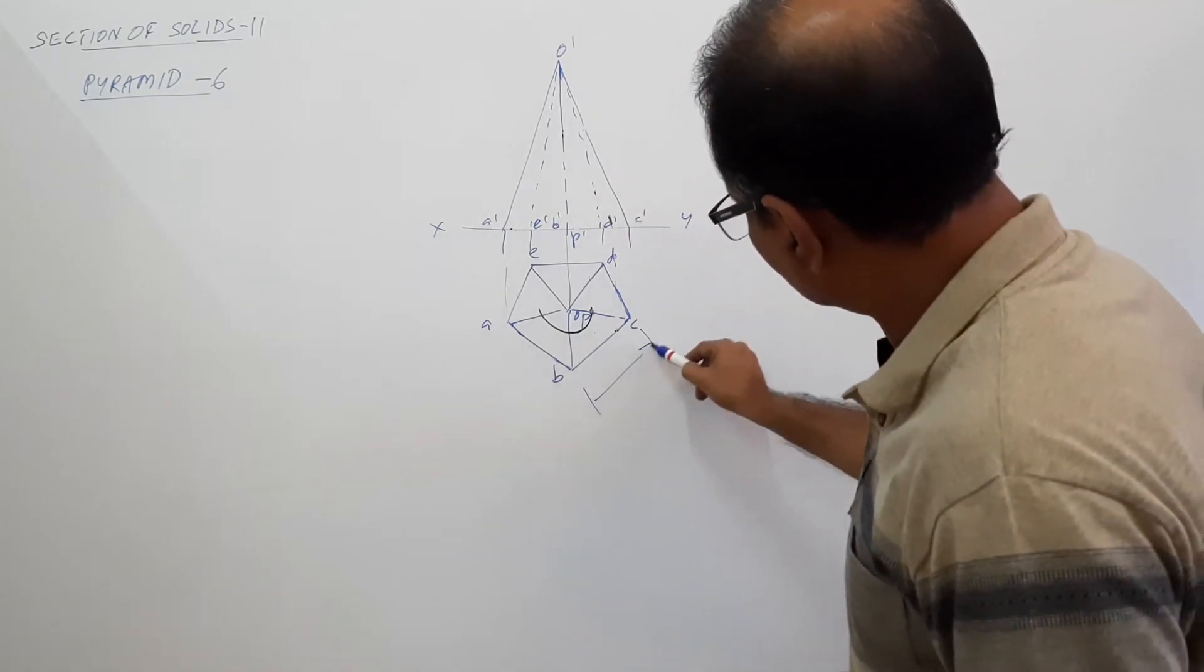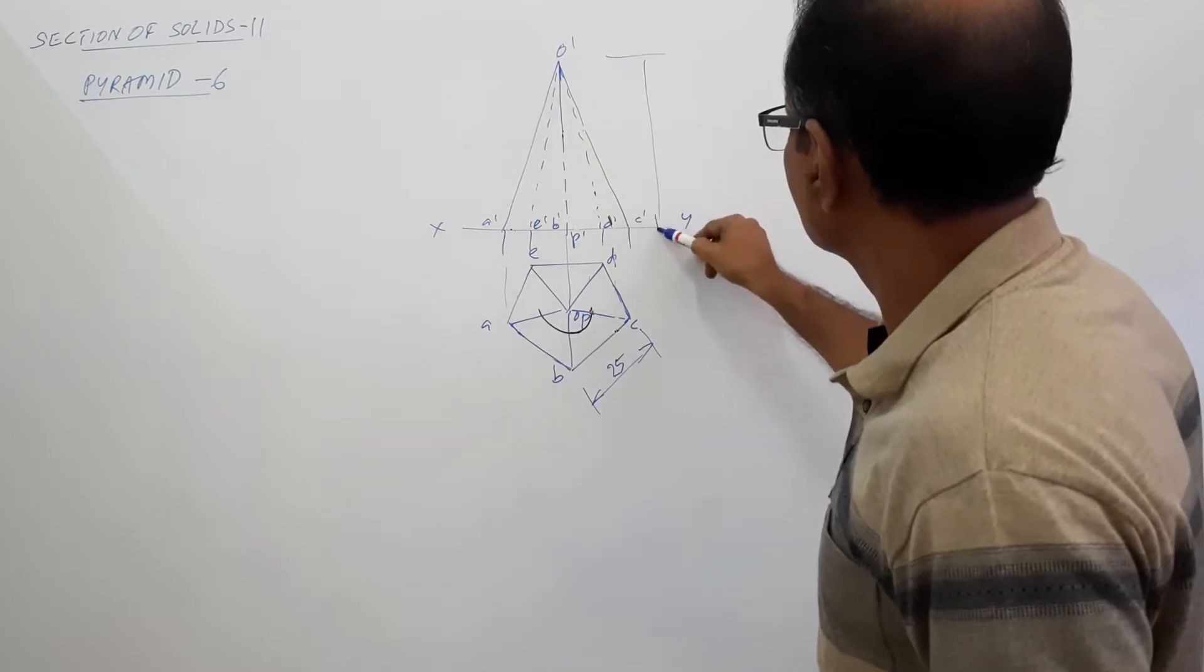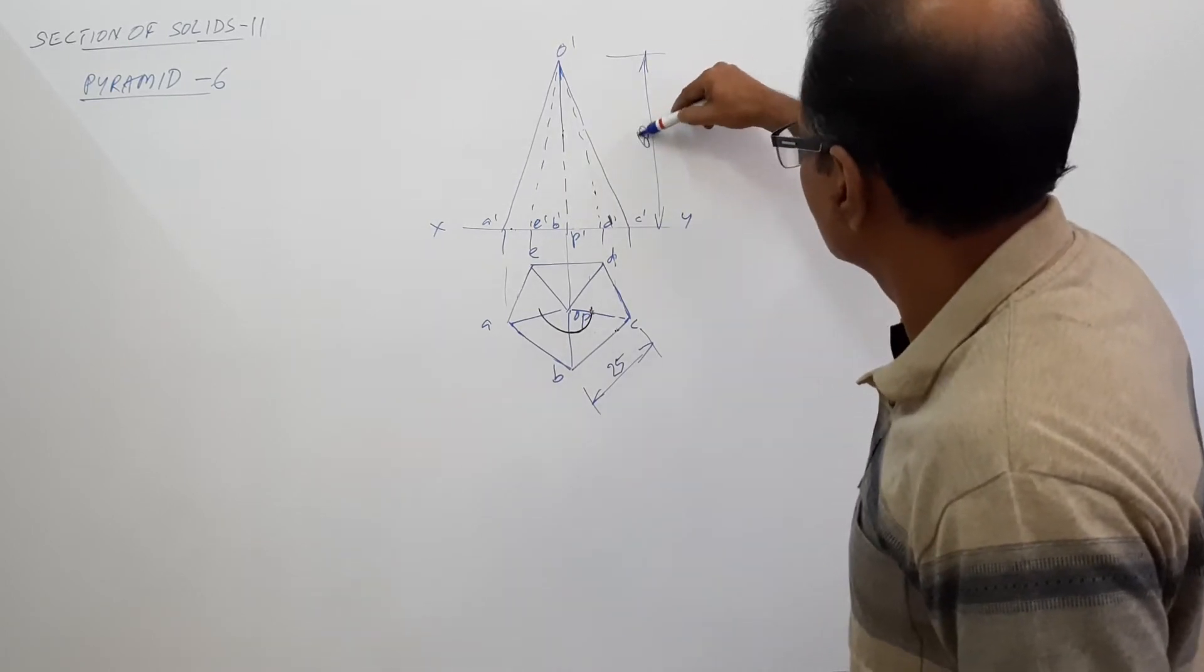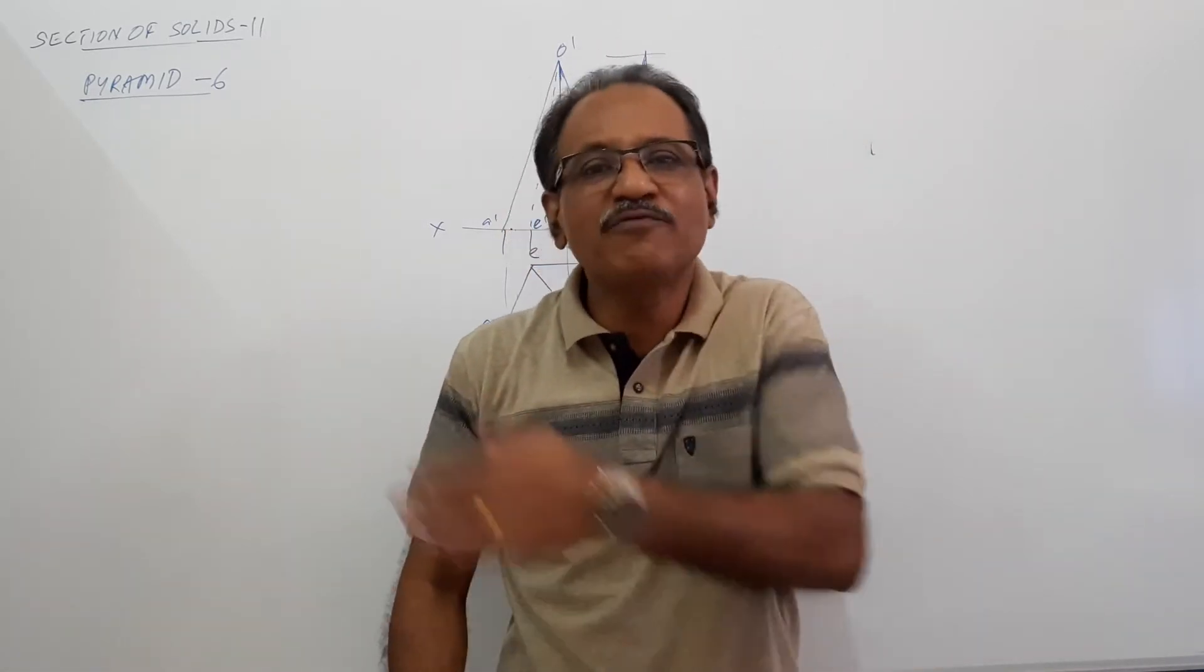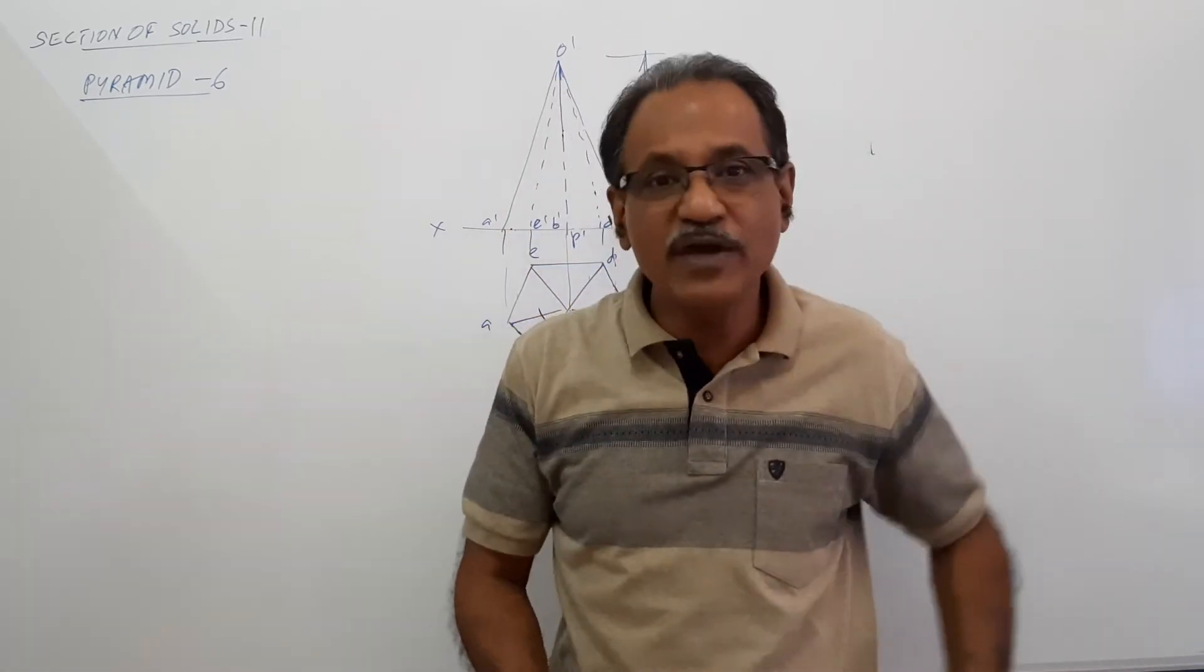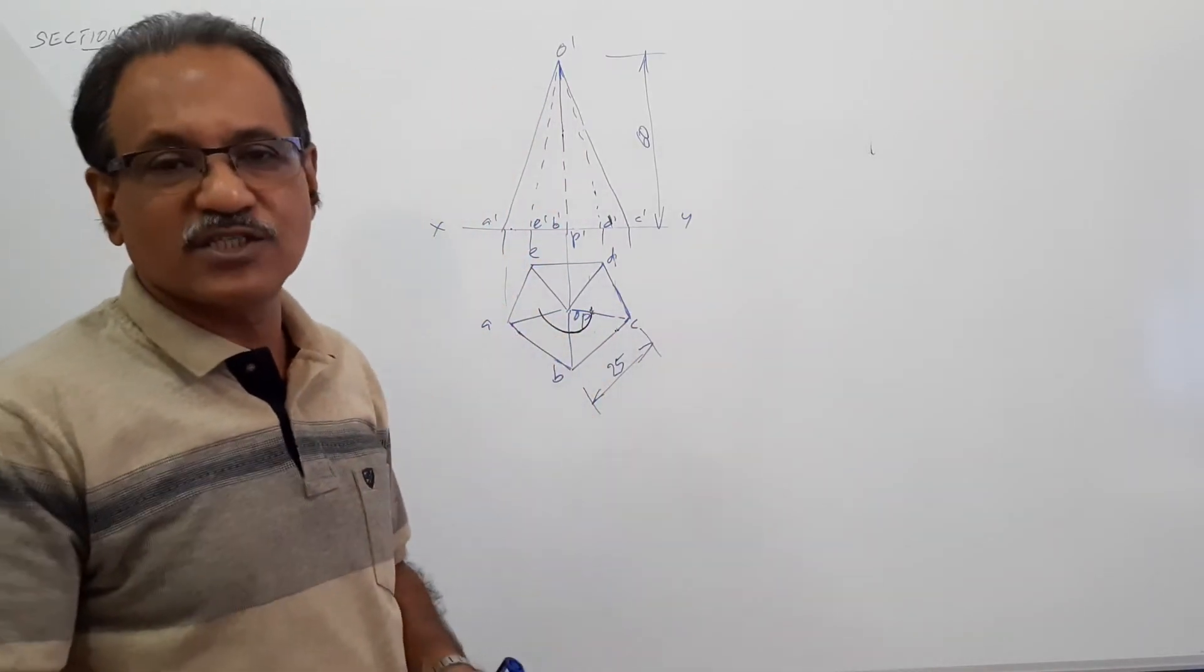25 mm axis, 60 mm axis, standing based on HP. This is cut by a cutting plane inclined to VP by 50 degrees and passing through 10 mm away from the particular axis.